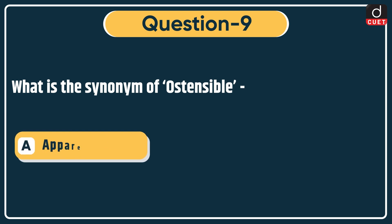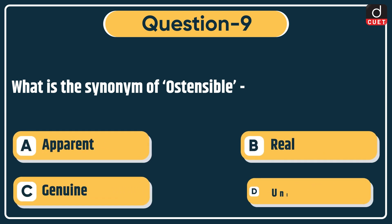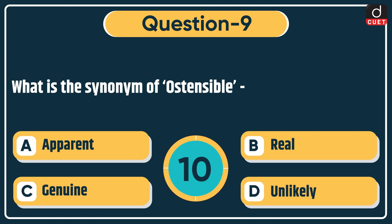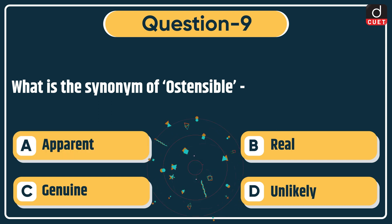Next question: what is the synonym of 'Ostensible'? Options: Apparent, Real, Genuine, or Unlikely. The correct answer is option A: Apparent.